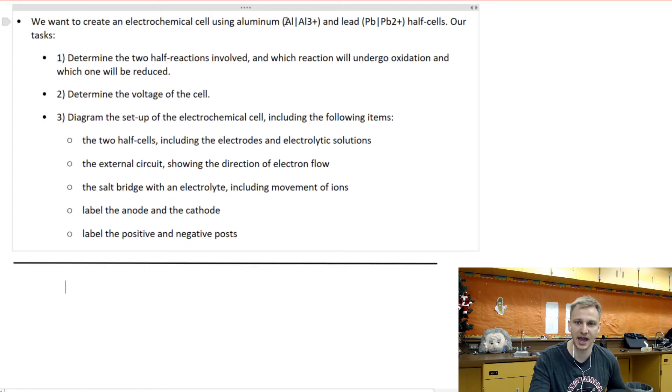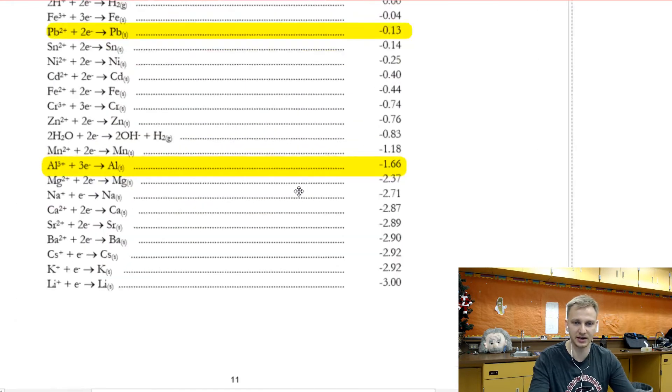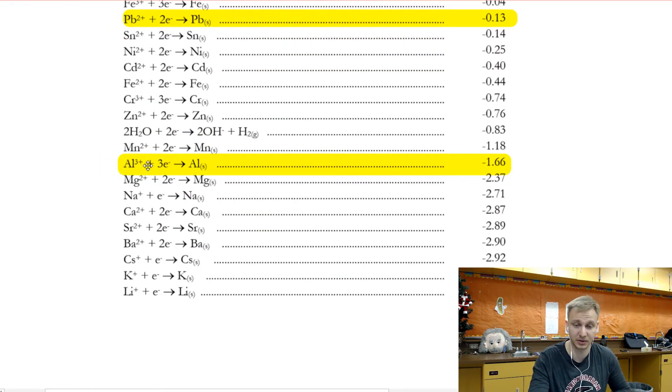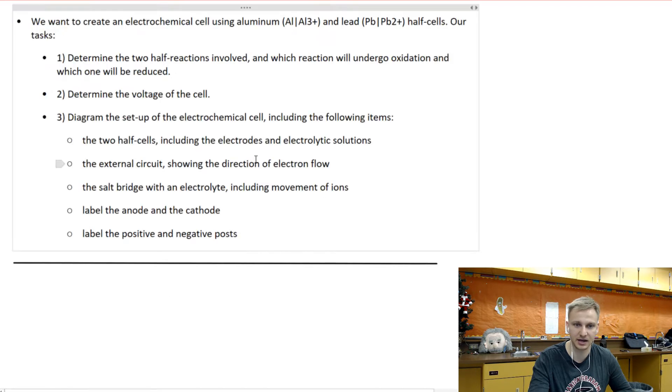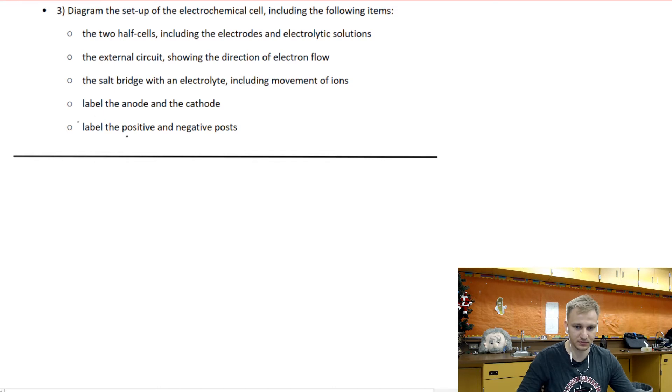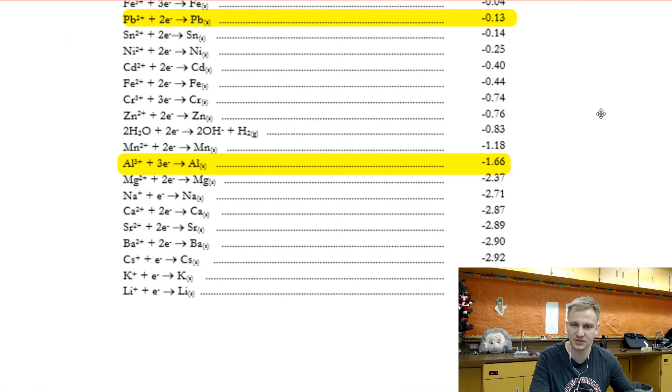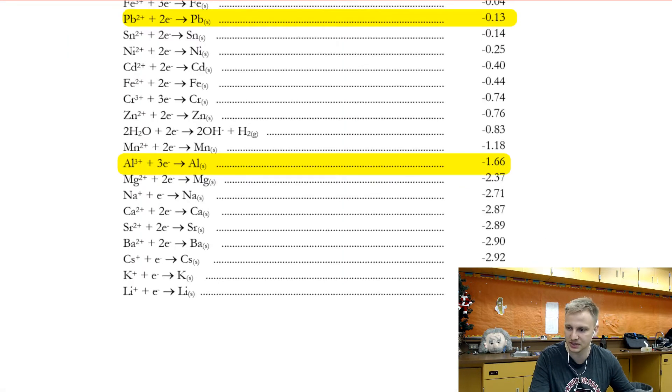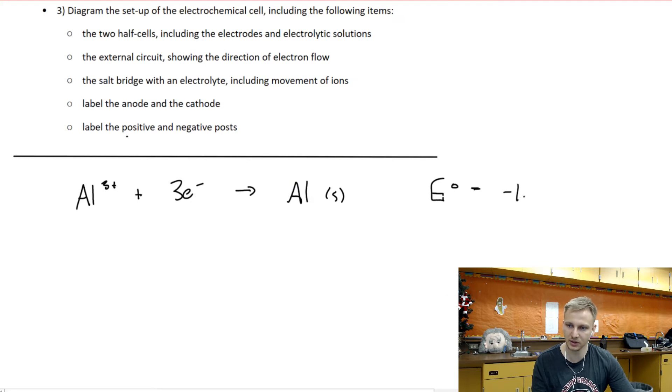So what we have right now is we have the AL and AL3+ as one of our little pieces of metal that we'll be using. So I have that highlighted here, you can see the AL3+ plus 3 electrons turns to AL solid, and we have a negative 1.66 as our potential difference. So we have the AL3+ plus 3 electrons going to produce AL solid, and our electron, our potential difference was negative 1.66, is equal to negative 1.66.